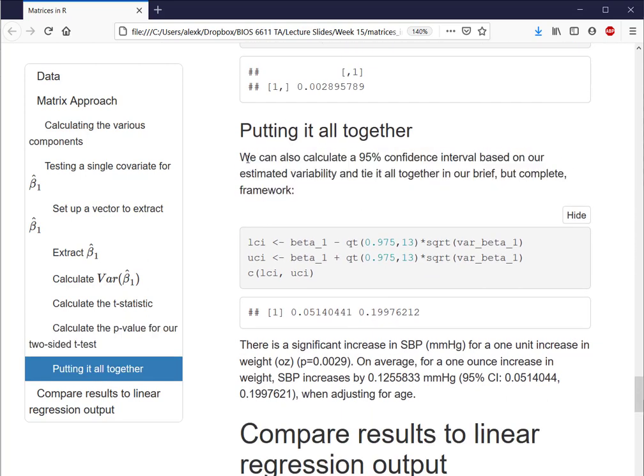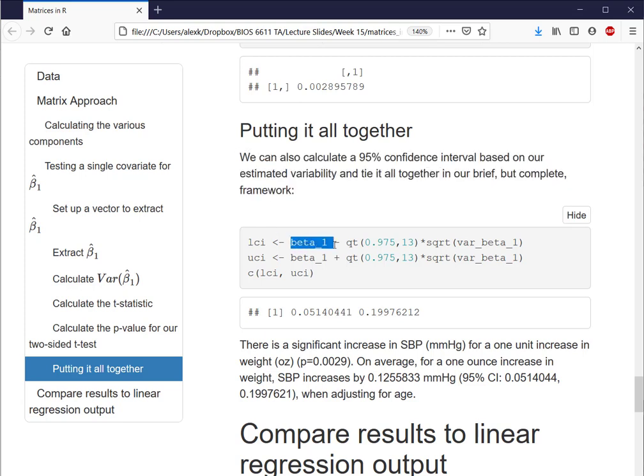So we can put this all together as well to actually have our brief but complete interpretation. So one of the things we still need to calculate is a 95% confidence interval for our beta coefficient. And here we can simply take our estimate we had before, subtract a critical value for our T distribution with our 13 degrees of freedom here, again that N minus P minus 1, times the standard error we calculated above as well for the variance. And here we see our lower and upper interval, which we can then combine together into the interpretation that there is a significant increase in systolic blood pressure for a one unit increase in weight, where P is equal to 0.0029. On average, for a one ounce increase in weight, systolic blood pressure increases by 0.13, with a 95% confidence interval from 0.05 to 0.20, when adjusting or accounting for age in the multiple linear regression model.